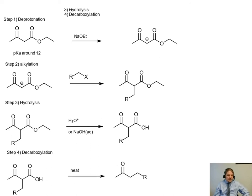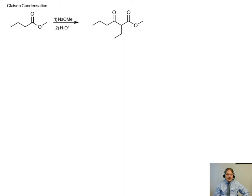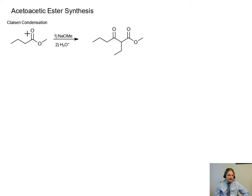So I also promised to do a different example. And so we're going to start with a different ester formed by a different Claisen condensation. Here we have methyl butanoate. And the Claisen condensation product is this substituted ester. So it already has an alkyl group in that alpha position.